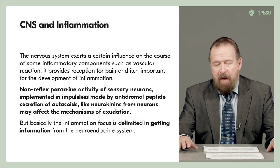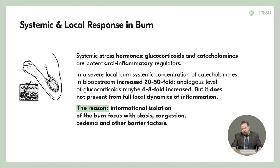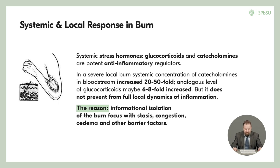Now I would like to give a very clear example of how local and systemic mechanisms interact through acute inflammation. Consider an unhappy person who was ironing his trousers and accidentally burned the elbow area of his left arm. In that burned area, there is a typical zone of acute inflammation with strong dynamics — a huge amount of inflammatory autacoids produced or activated.